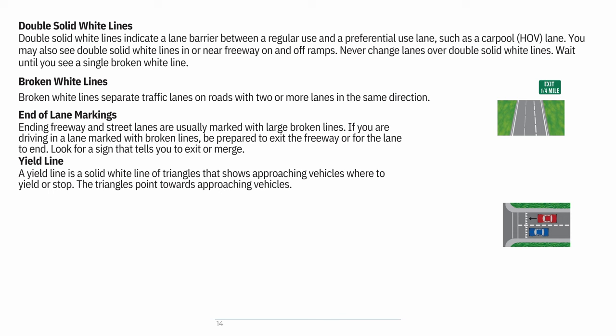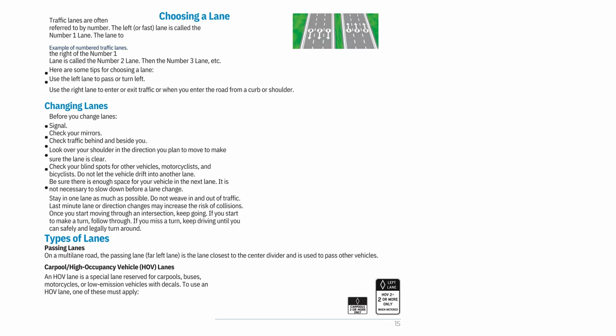Broken white lines: separate traffic lanes on roads with two or more lanes in the same direction. End-of-lane markings: ending freeway and street lanes are usually marked with large broken lines — if you are in a lane marked with broken lines, be prepared to exit the freeway or for the lane to end. Yield line: a solid white line of triangles that shows approaching vehicles where to yield or stop — the triangles point toward approaching vehicles.